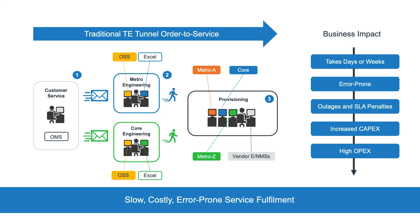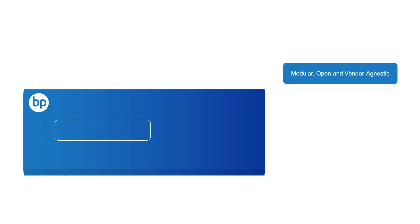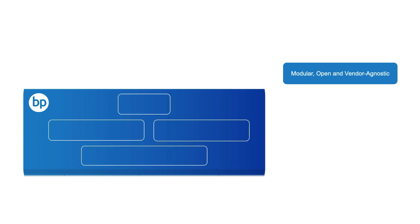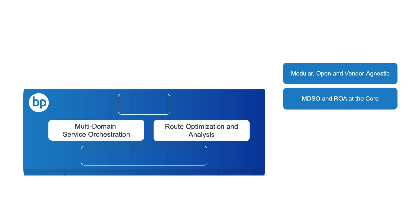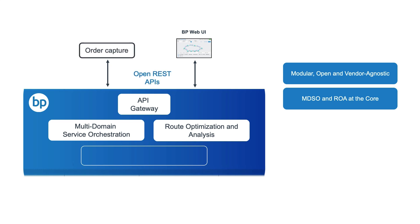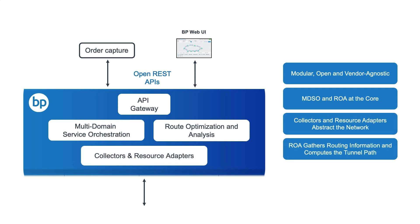Let's see how Blue Planet MPLS Network Automation can help. Blue Planet MPLS Network Automation is a modular, open, and vendor-agnostic solution — important qualities for an automation portfolio. Like many intelligent automation solutions, it packages capabilities from across the Blue Planet portfolio and includes pre-packaged services designed to speed integration into your network and back office. At its core, the solution requires MDSO and ROA. You can use the Blue Planet web UI or drive it through external systems using the REST API. Resource adapters and collectors are used to abstract the network, enabling common functionality across a multi-vendor environment.